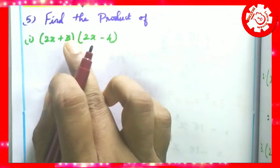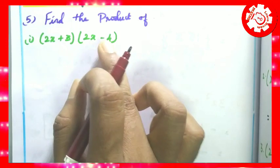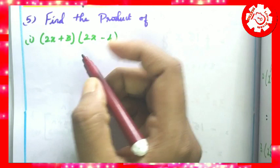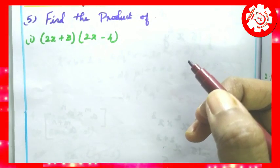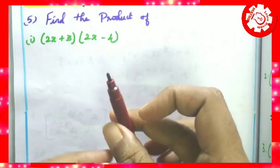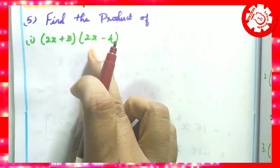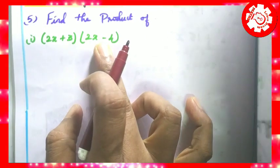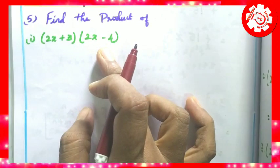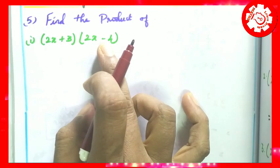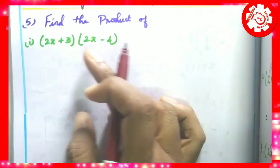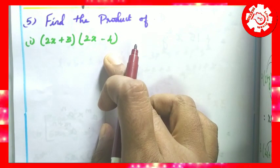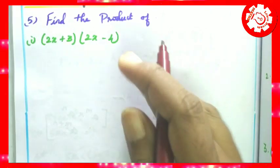Find the product of 2x plus 3 into 2x minus 4. That is, the product — multiplication. You will multiply this expression. 2x plus 3 is a binomial. Similarly, 2x minus 4 is a binomial. So, a binomial multiplied by a binomial.